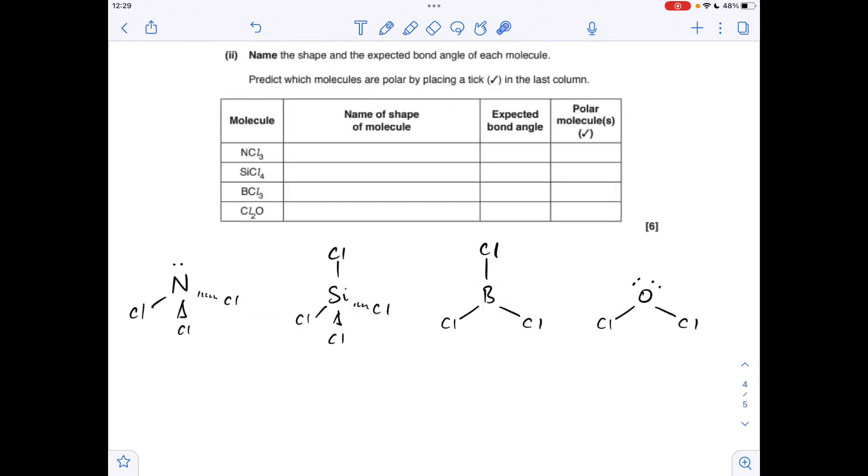So moving on to the next table, you can see I've drawn out the molecules and I'll be using those to explain the shape, the angle, and whether it's polar or not. Starting with NCl3, we've got that one lone pair and three bonding regions, so the name of that shape is pyramidal. The starting angle for four electron regions around that valence shell is 109.5, but the extra repulsion from the lone pair takes 2.5 degrees off that, so the expected angle is 107 degrees.